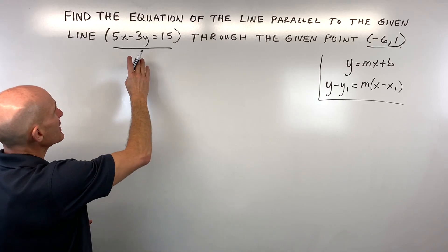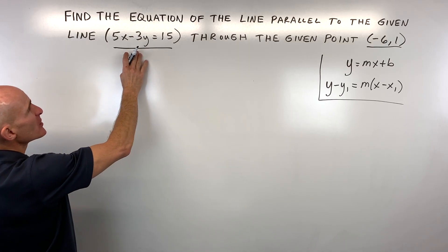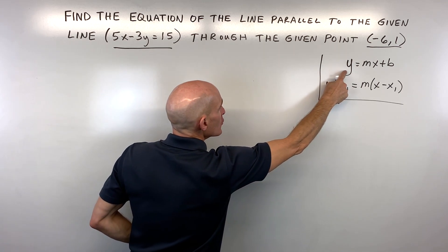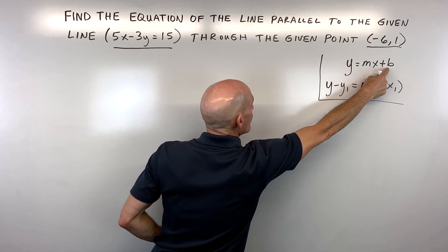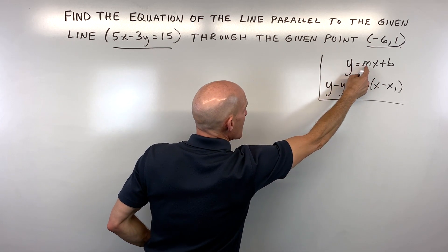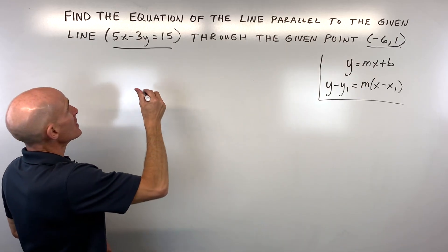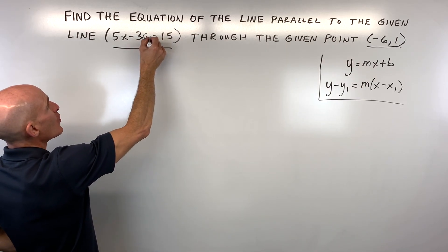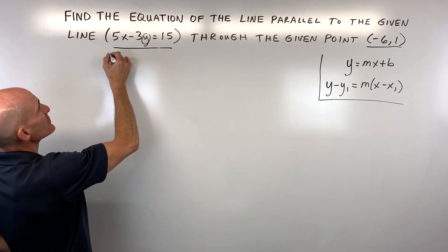The thing here is we need to rearrange this equation into slope-intercept form so that we can identify the slope, which is this m value. So in order to do that, we need to get this y by itself.